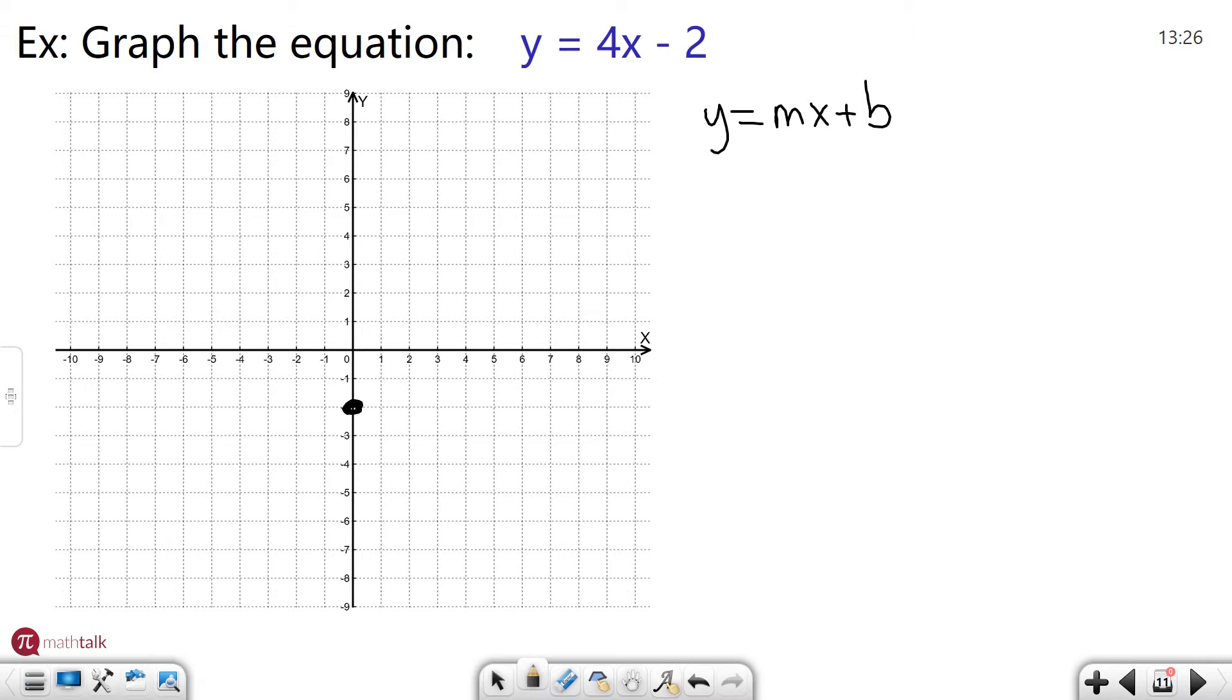So a slope of 4 is the same thing as 4 over 1 which means I have to rise 4. So 1, 2, 3, 4 and run 1. So I'm going to do that and then technically I can draw my line because you need two points to create a line. What I like to do though is I create a third point just to make it easier to draw the line.